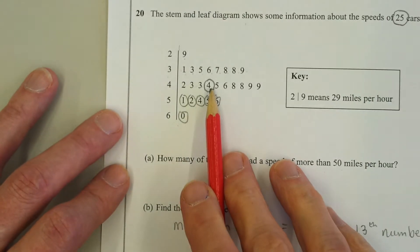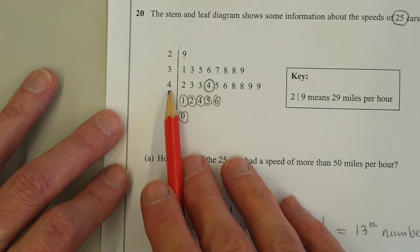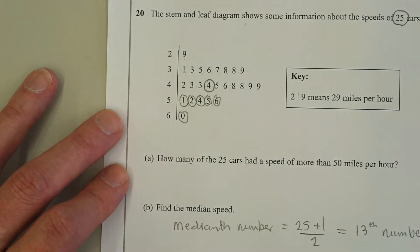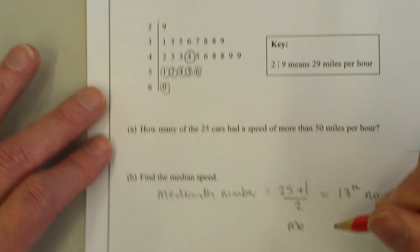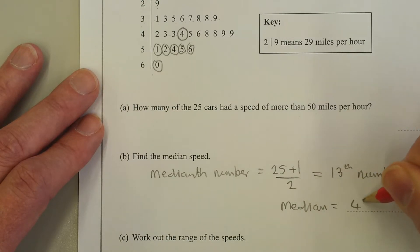That number's a 4, but remember you need to look back at the stem. So that is not 4, it is 44. So the median equals 44.